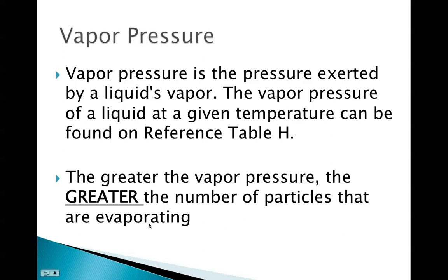Something that might be new is vapor pressure. When those particles actually change from a liquid to a gas, they exert a pressure upward as they move from a liquid to a gas. The vapor pressure of a liquid at a given temperature can be found on reference table H. The greater the vapor pressure, the greater the number of particles that are evaporating because there's more of a push up off the liquid.